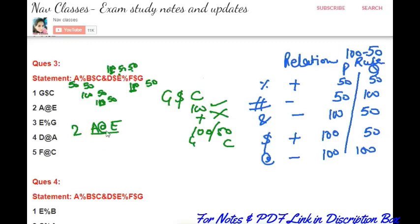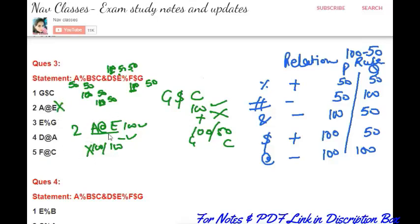For A@E: at the rate means negative conclusion, 100-100 relation required. From A to E: checking all merges — D and E (100 with D), C and D (100 with C), B and C (100), A and B (100 with B). First condition satisfied. Checking negative: percent and dollar are positive, '&' (and) is negative — negative condition satisfied. But can A spend 100 out of just 50? Not possible — this is wrong. So A@E is not following.